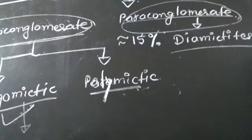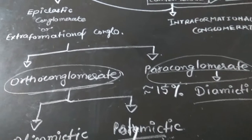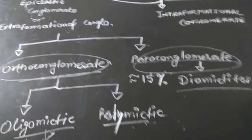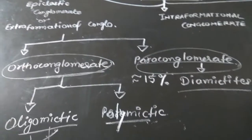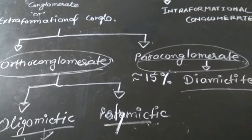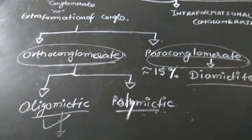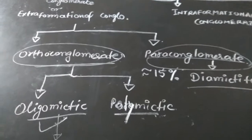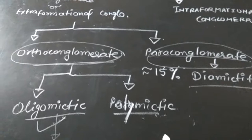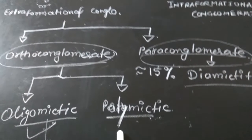To summarize the classification of extraformational conglomerate: clasts are derived from multiple basins and it is divided into orthoconglomerate and paraconglomerate based on matrix content, tectonic setting, and roundness. Orthoconglomerate is further classified into oligomict and polymict conglomerate based on whether the clasts share the same or different chemical composition.